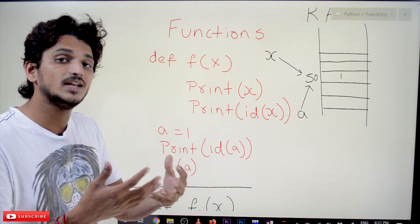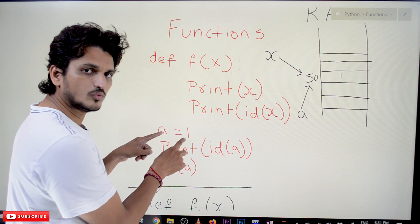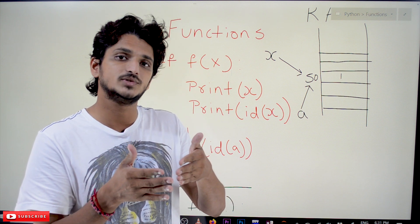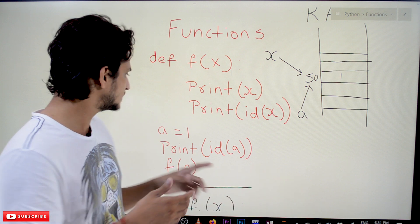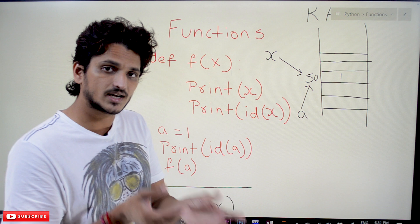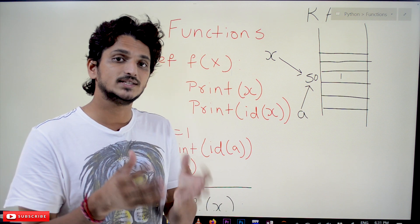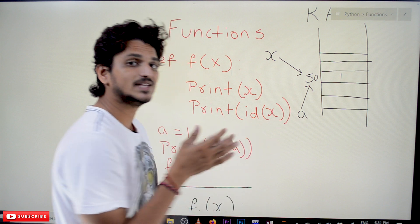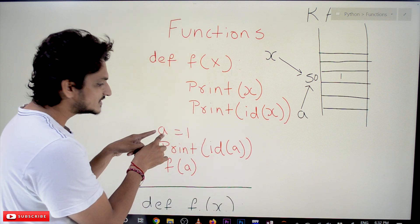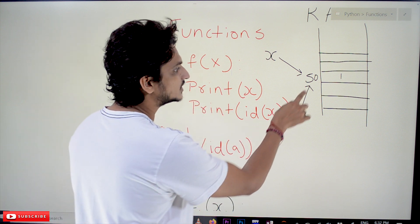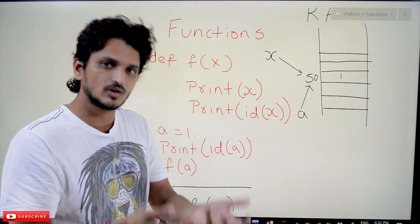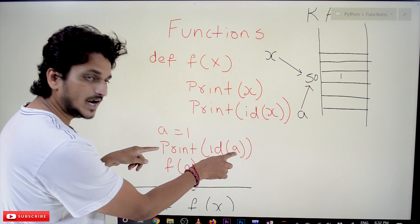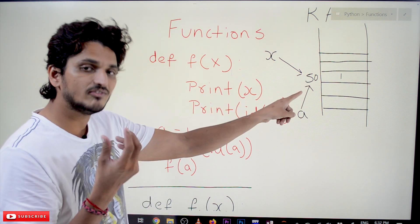So what happens here internally? That's very important to understand. A is equal to 1. When we discussed about variables, memory allocation and interning, how memory is allocated to objects and different data types — based on that, 1 is an integer object. An integer object has been created and saved in a memory location. Now a is referencing to that memory location, say memory location 50. So when you print id of a, it will display memory location 50.